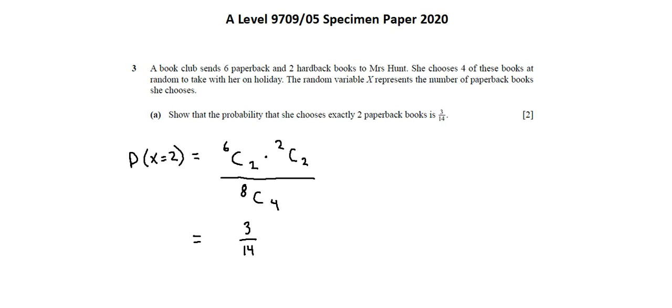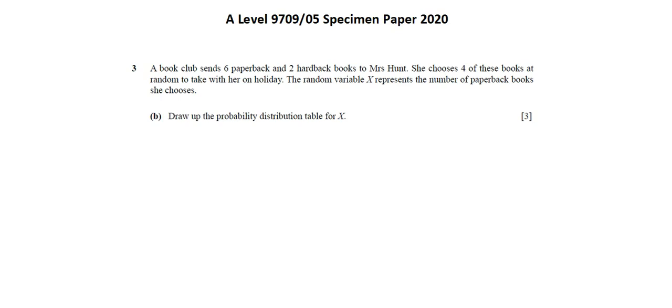Let's continue on to requirement B. Draw up the probability distribution table for X. The probability distribution table has two rows. One is X, which is the possibilities for the outcome X. The other is the probability that X, that's a capital, equals X, a lowercase. And we need to think about how many different options we have. In this scenario, Mrs. Hunt is choosing four books.